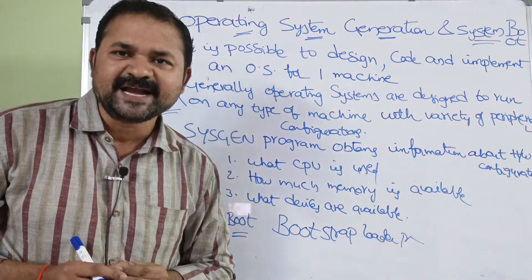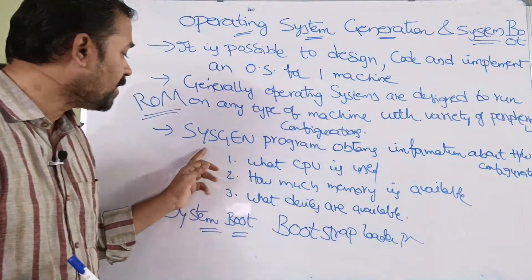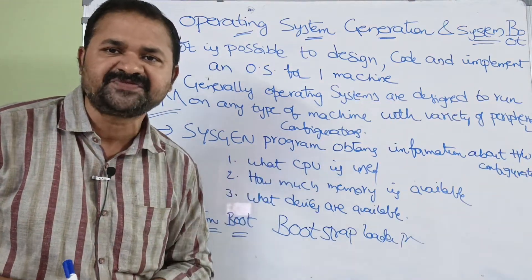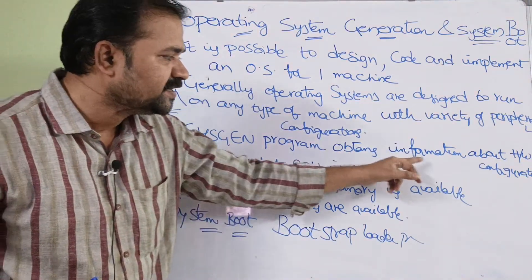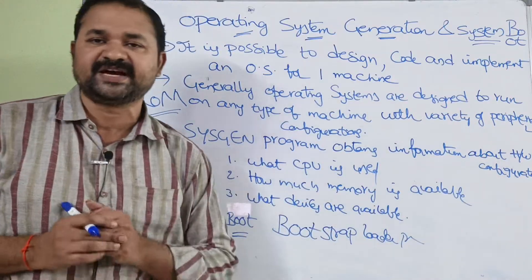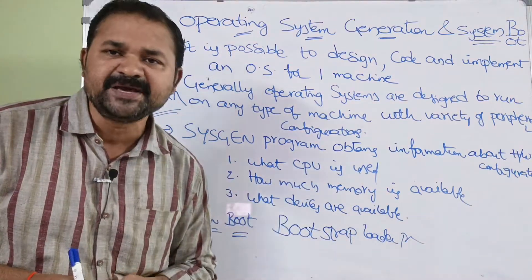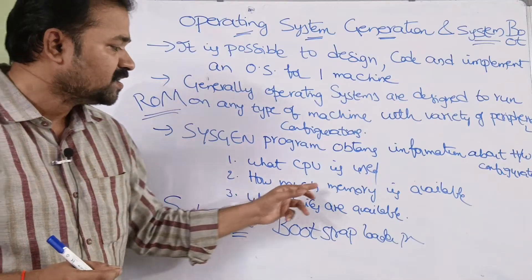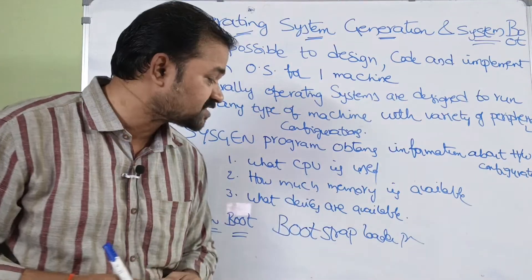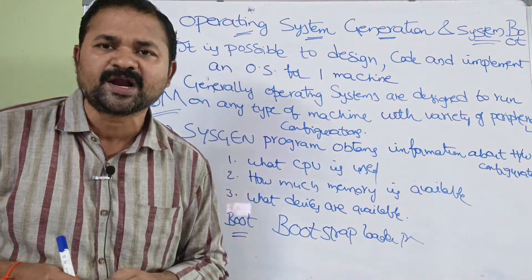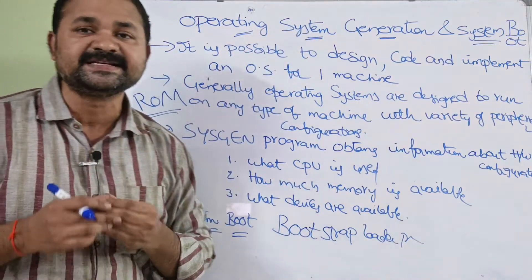For that, the operating system needs some data. The data will be provided by a program called the SysGen program. SysGen stands for system generation. The SysGen program obtains information about the hardware configuration — mainly three details: first, what CPU is used; second, how much memory is available; and third, what devices are available. The SysGen program provides all these details to the operating system.